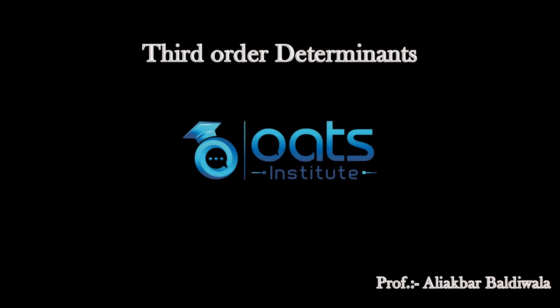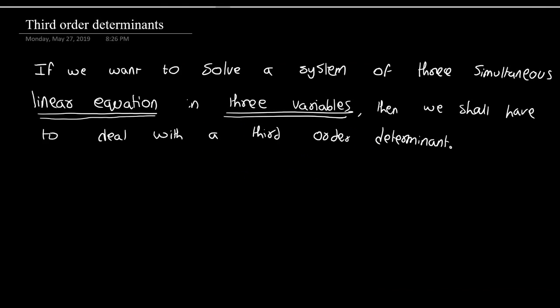Hello everyone. I am back again with the next lecture on determinants. Today we are going to study about what is a third order determinant and how to solve a third order determinant. The third order determinant comes into play when we want to solve a system of three simultaneous linear equations which has three variables. Then we shall have to deal with third order determinants.